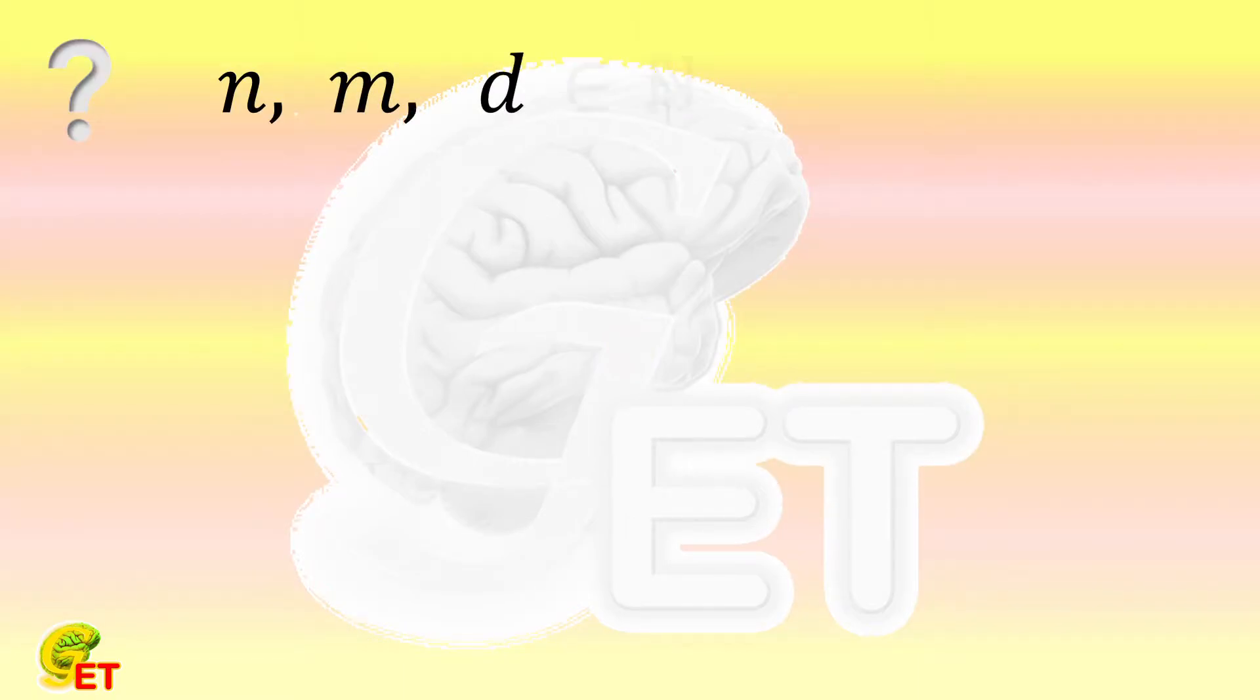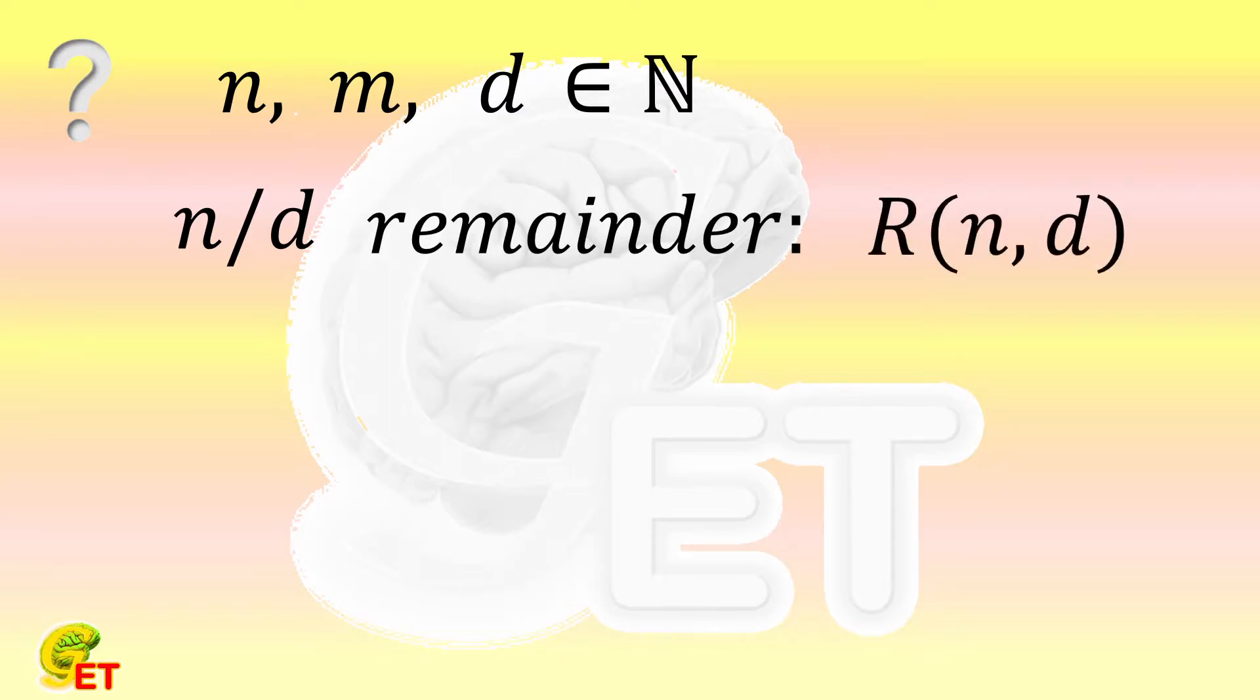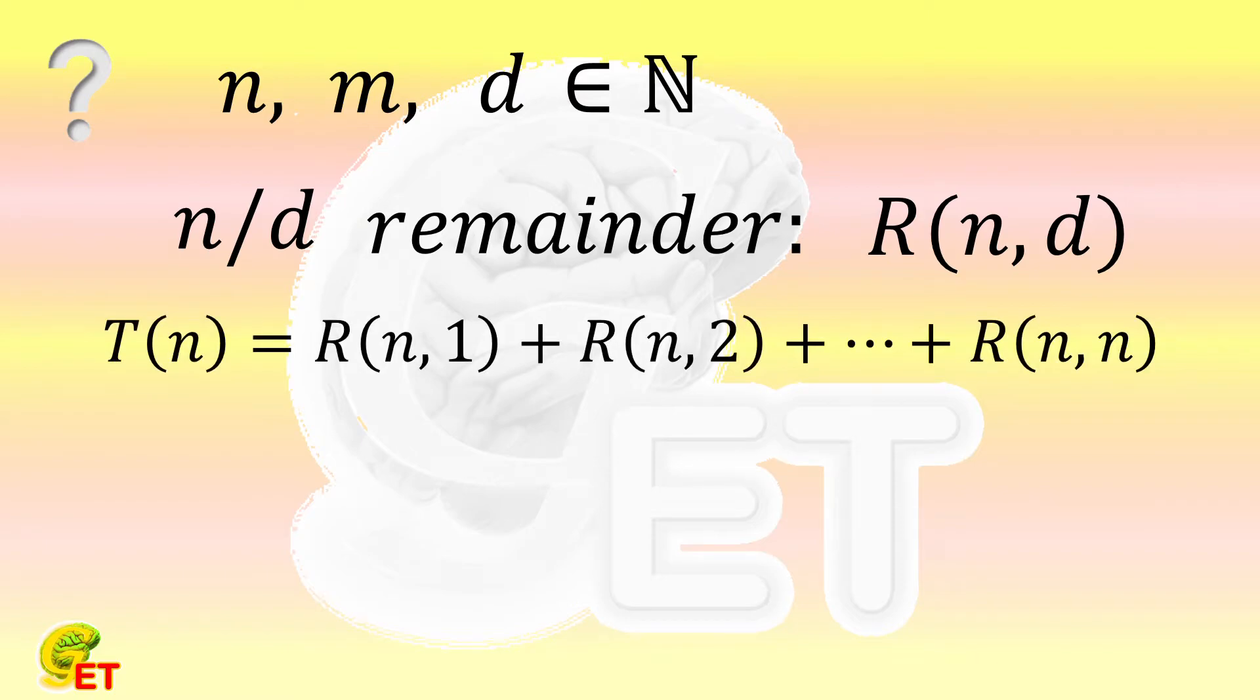n, m, and d are three natural numbers. We name the remainder of n divided by d as R(n,d). And for any d which is not bigger than n, we add up all R(n,d) together, and name the summation as T(n).